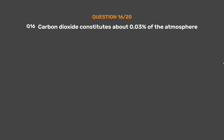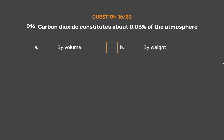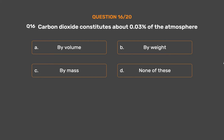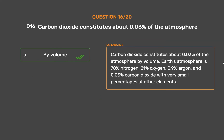Question number sixteen: carbon dioxide constitutes about 0.03% of the atmosphere — by what measure? Option A: by volume. Option B: by weight. Option C: by mass. Option D: none of these. The correct answer is option A, by volume. Carbon dioxide constitutes about 0.03% of the atmosphere by volume. Earth's atmosphere is 78% nitrogen, 21% oxygen, 0.9% argon, and 0.03% carbon dioxide, with very small percentages of other elements.